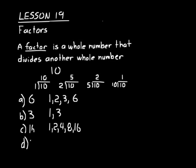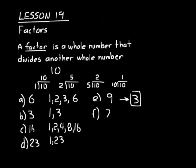Let's do another one: 23. What are the factors of 23? That would just be 1 and 23, since 1 times 23 equals 23. Now let's count the factors for some numbers. How many different factors does 9 have? 1 times 9, and 3 times 3, so the factors are 1, 3, and 9 — that's 3 factors. For 7: 1 times 7 is all that works, so just 2 factors.